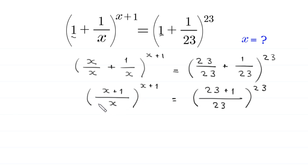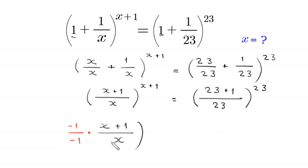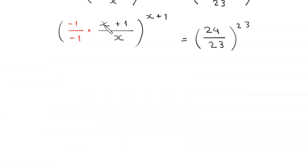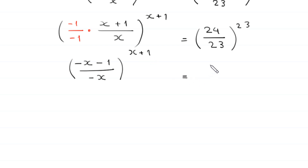To fix this, we multiply and divide the expression inside the parenthesis by negative 1. So x plus 1 over x becomes negative 1 times x plus 1, divided by negative 1 times x. This gives negative x plus negative 1 divided by negative x, whole to the power x plus 1, equal to 24 over 23, whole to the power 23.